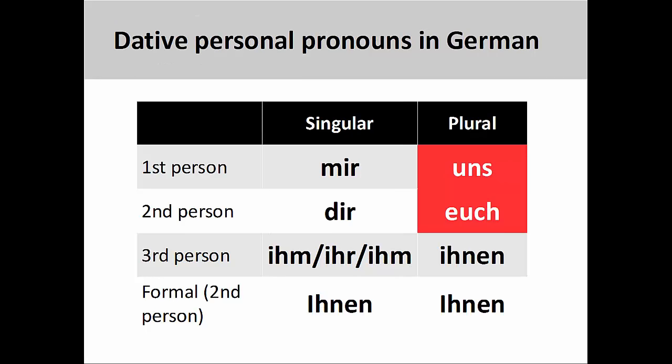The dative personal pronouns are also organized by number, person, and gender. Of these pronouns, only uns — first-person plural — and euch — second-person plural — are similar to the accusative personal pronouns. Because of this similarity, you will need to be careful in distinguishing between the accusative and dative forms.